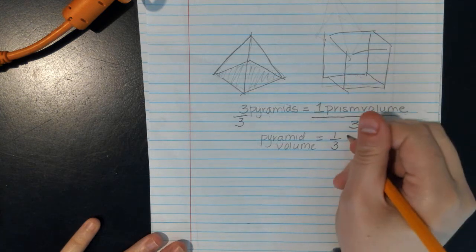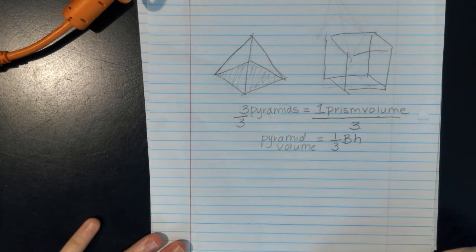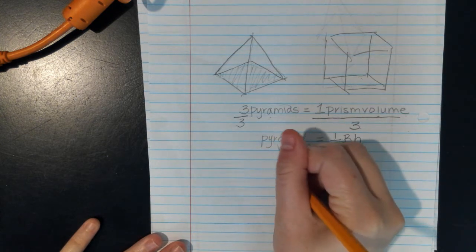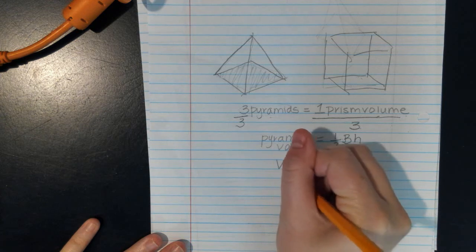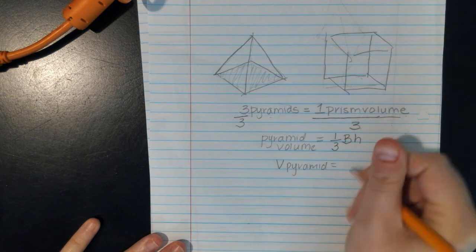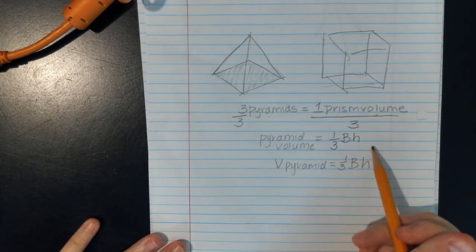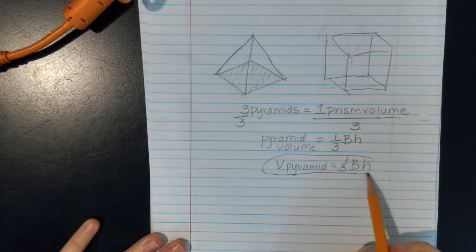And how do we find volume of a prism? Area of the base times the height. So that's how you're going to see that formula. So volume of a pyramid equals one third big B times H. And that is our formula for volume of a pyramid.